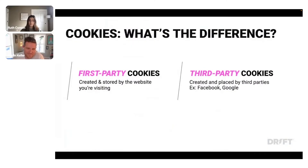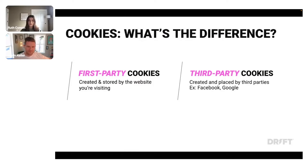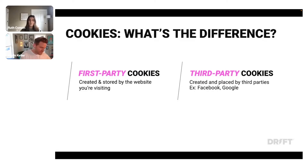Let's talk about the difference between first-party and third-party data. First-party comes from your own site cookies and is stored purely by your site. This is everything that the user tells you about themselves through on-site behavior — opting in to sharing their information through chats, forms, and other means.